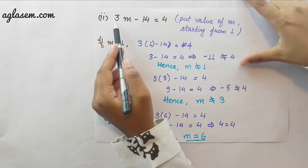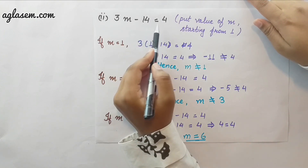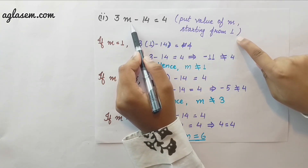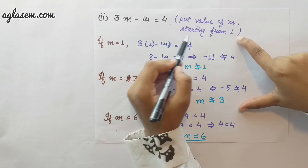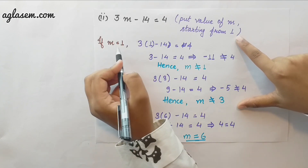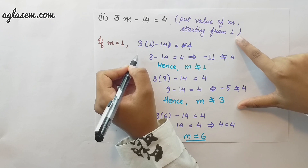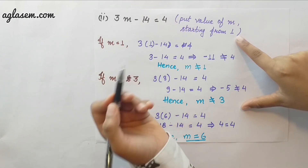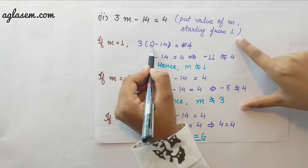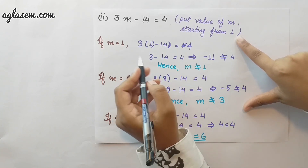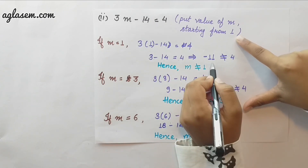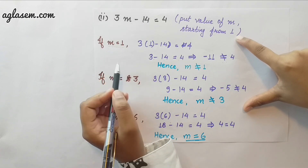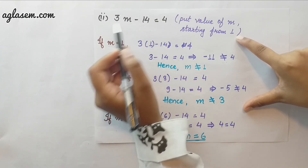In the second question using hit and trial, the equation is 3m minus 14 equals to 4. We take the value of m starting from 1. For m equals to 1: 3 into 1 minus 14 equals to 4 gives minus 11, which is not equal to 4. Therefore m equals 1 does not satisfy the equation.